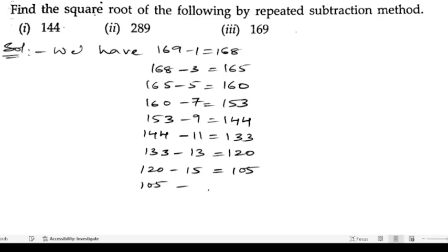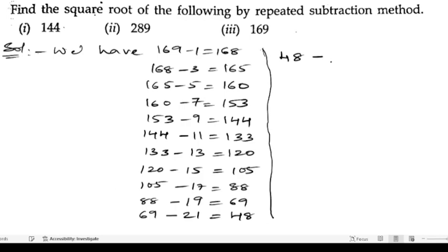105 minus 17, so 88. 88 minus 19, 69. 69 minus 21, 48. 48 minus 23, so this is 25. 25 minus 25, 0.